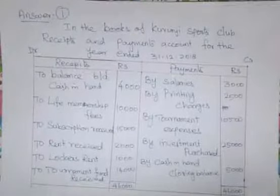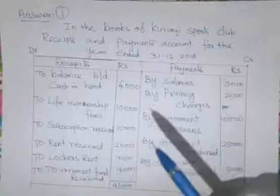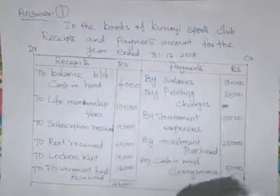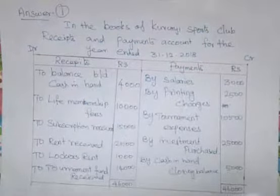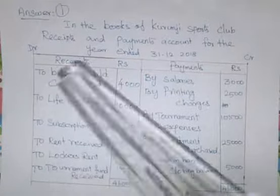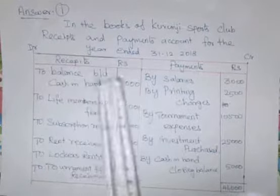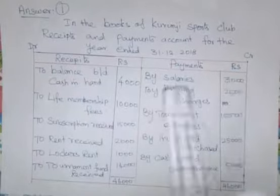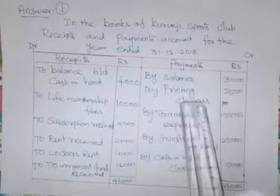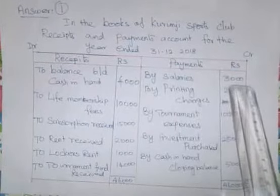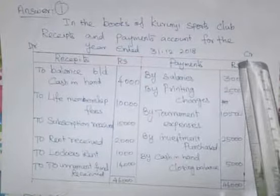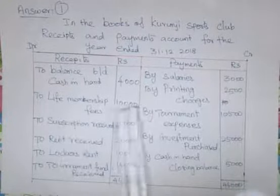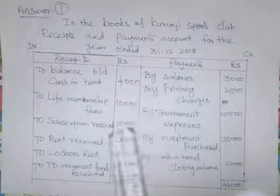Let me repeat once again. Receipts side is the debit side; payment side is the credit side. To opening cash balance Rs. 4,000. Then by salaries Rs. 3,000. By printing charges Rs. 2,500. Life Membership Fees received Rs. 10,000. Subscription received Rs. 15,000.